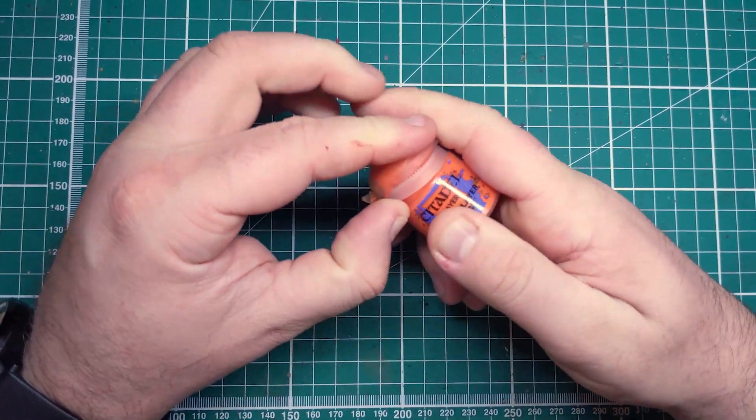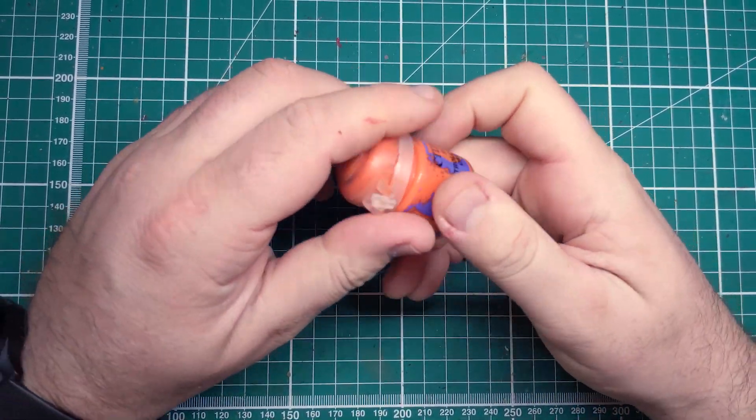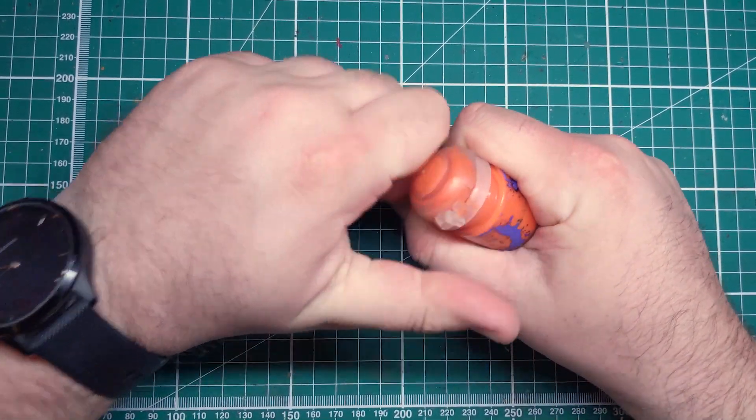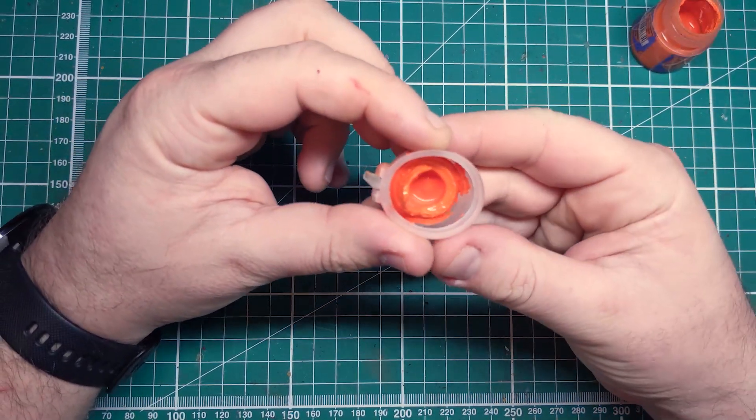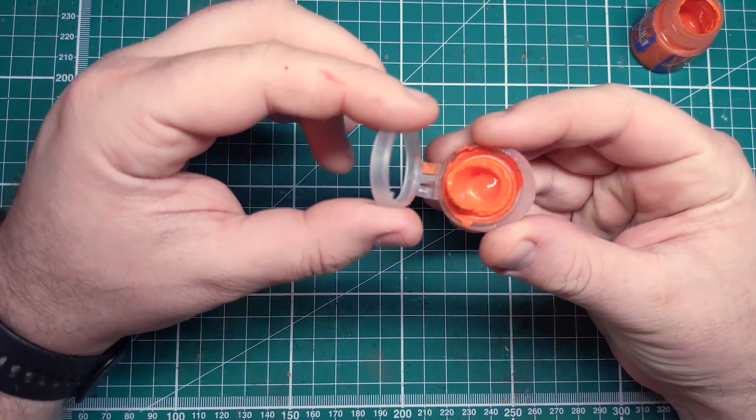Firstly, you want to start by removing the lid from the paint pot. The easiest way to do this is to get your fingernail or something sharp under the plastic rim and work its way off. As you can see, it is incredibly full of gunk here.